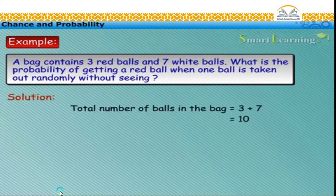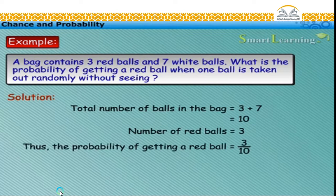Total number of balls in the bag is equal to ten. Out of these, number of red balls is equal to three. Thus, the probability of getting a red ball is equal to three upon ten.